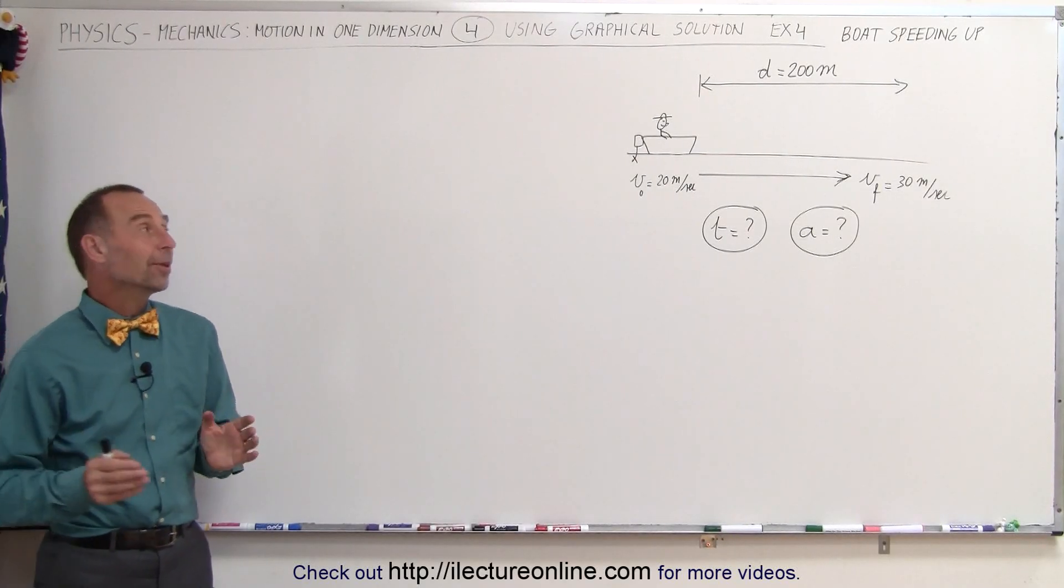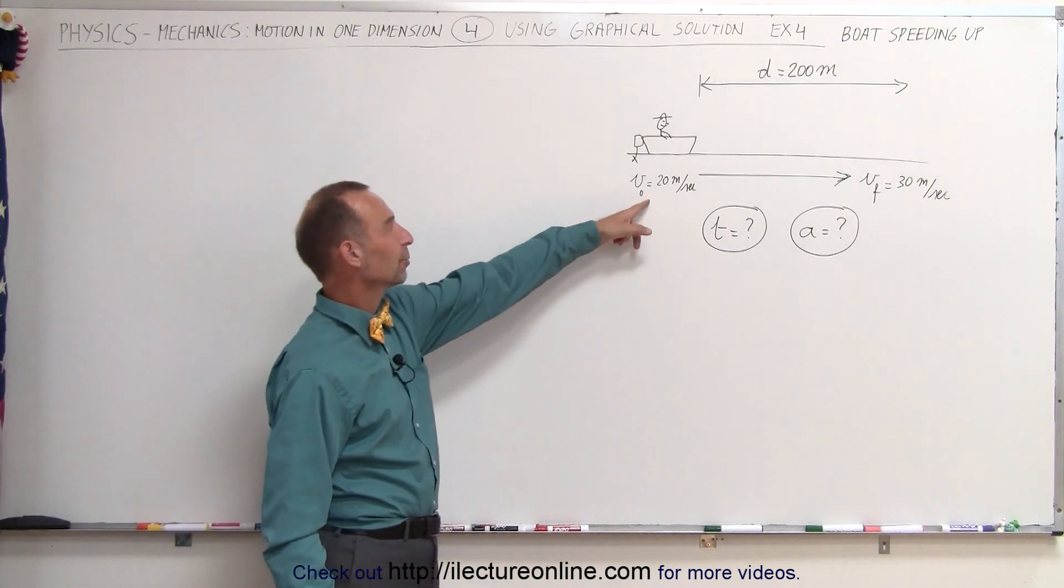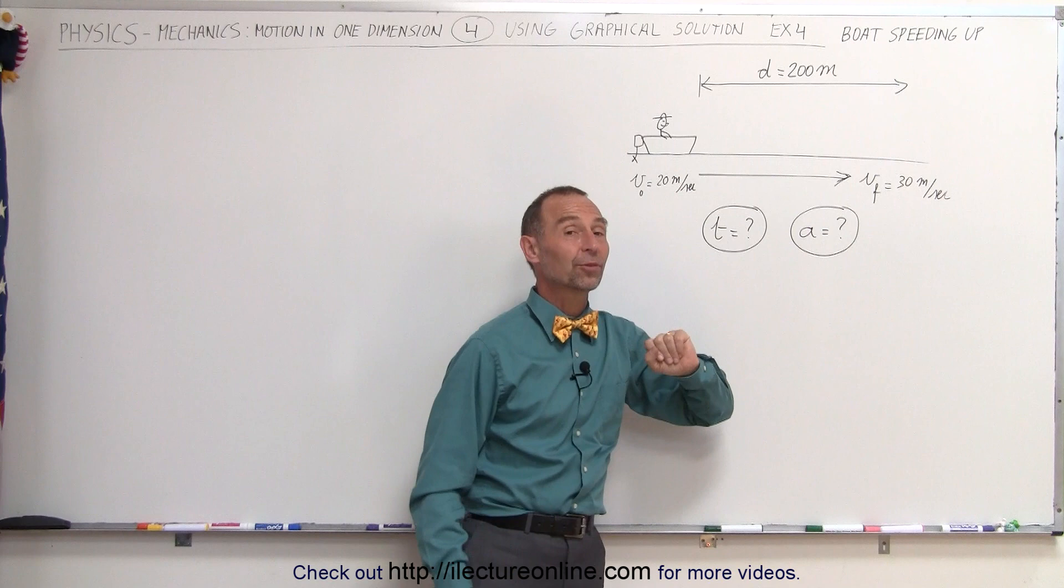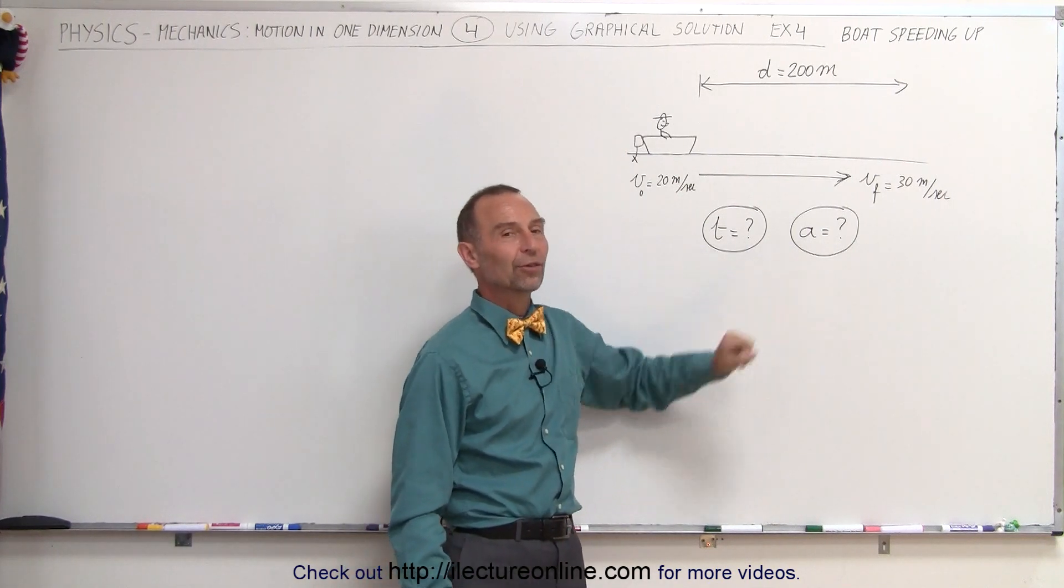Welcome to ElectronLine. Our next example is a boat speeding up in a river. Let's say the initial speed of the boat is 20 meters per second and over a distance of 200 meters speeds up to 30 meters per second. The question is how long did it take and what was the acceleration of the boat?